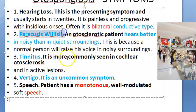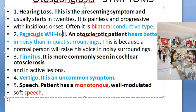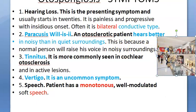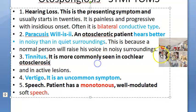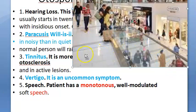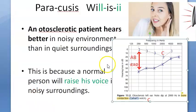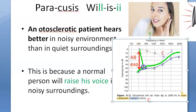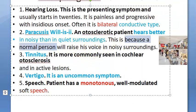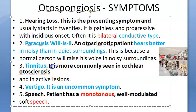An important symptom is paracusis Willisii — these patients can actually hear better in a noisy environment than in a quiet one. At home they can't hear, but in a mall where people speak louder, they hear better. This happens because they need higher decibels and more intensity to hear, so ambient noise helps them.